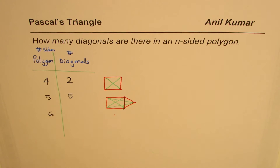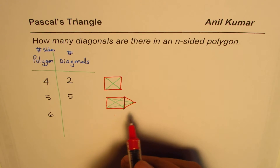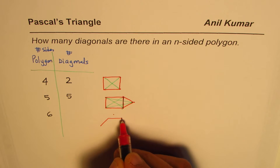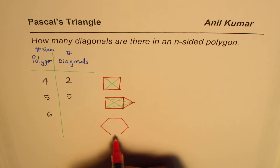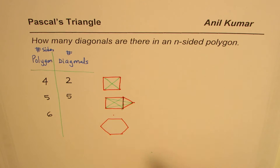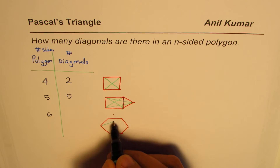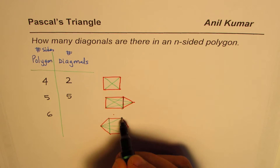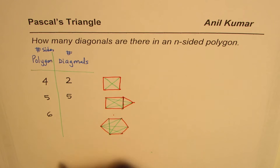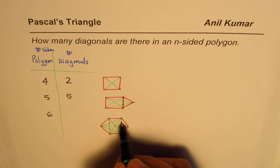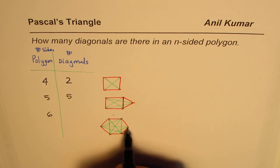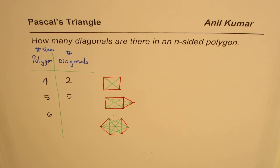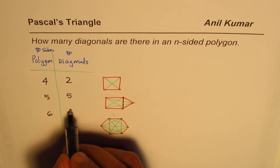If I increase the sides to six, it becomes a hexagon. Let me construct one: vertices one, two, three, four, five, six. Counting diagonals: one, two, three, four, five, six, seven, eight, and then nine. So we get nine diagonals for a hexagon.